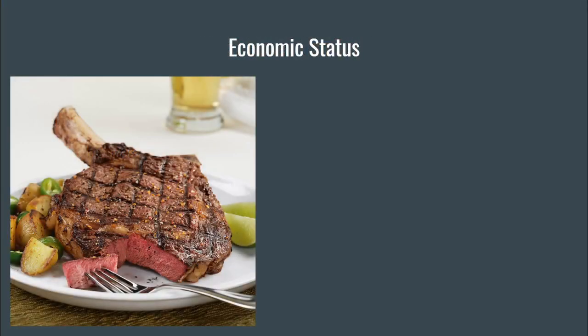Economic status can be inferred from the types of bones and cuts that were found in the archaeological record. When excavating, if archaeologists repeatedly find bones indicating higher quality cuts of meat or higher quantities of meat, it can be assumed that this person was of a high enough status to afford such cuts. So quantity and quality can speak volumes about the status of the people living where you excavate.